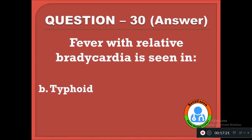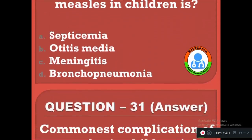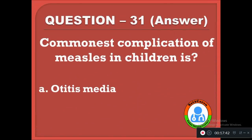Question 31: The commonest complication of measles in children is — option A: septicemia, B: otitis media, C: meningitis, D: bronchopneumonia. The correct answer is B, the commonest complication of measles in children is otitis media.